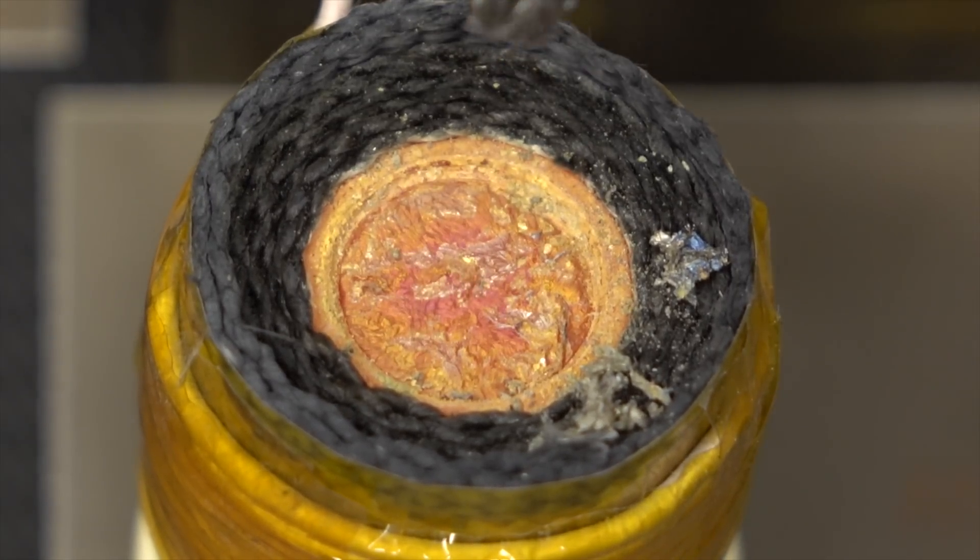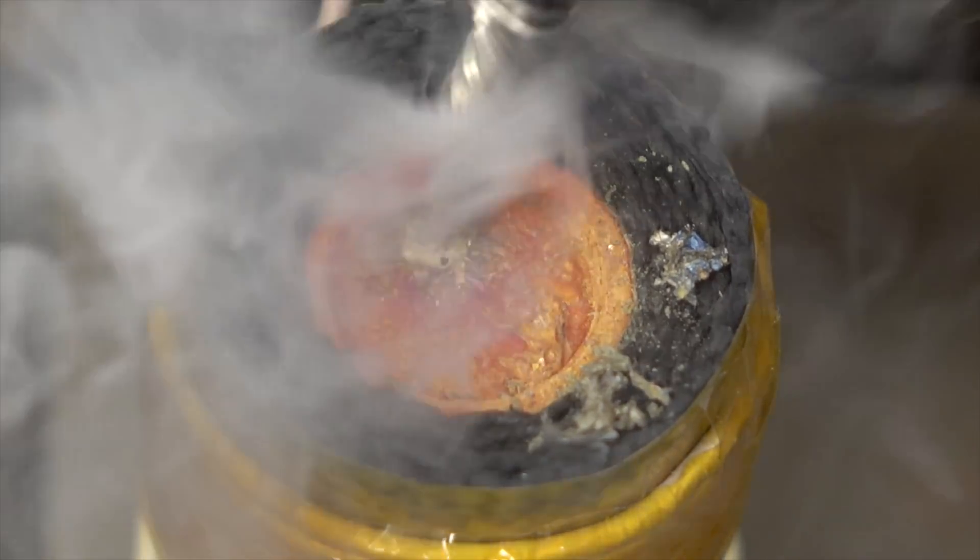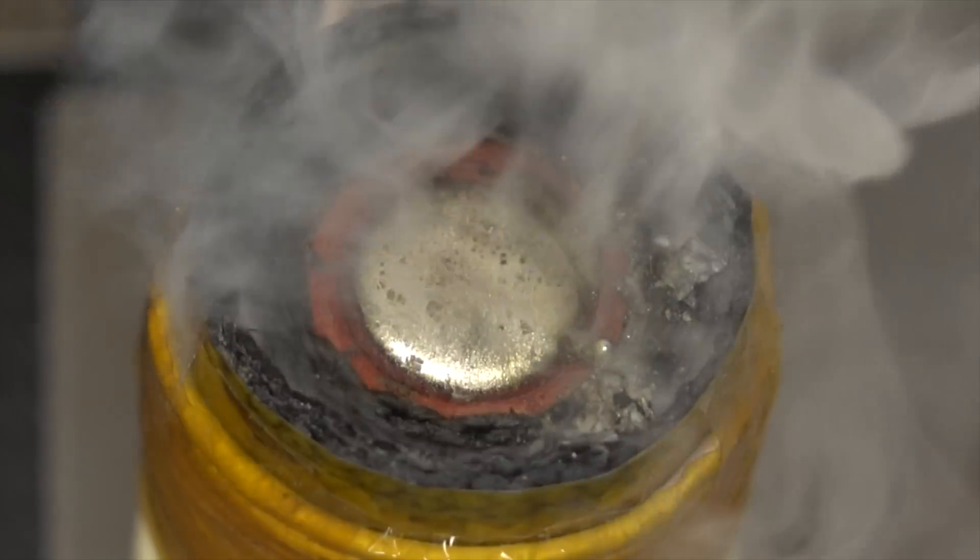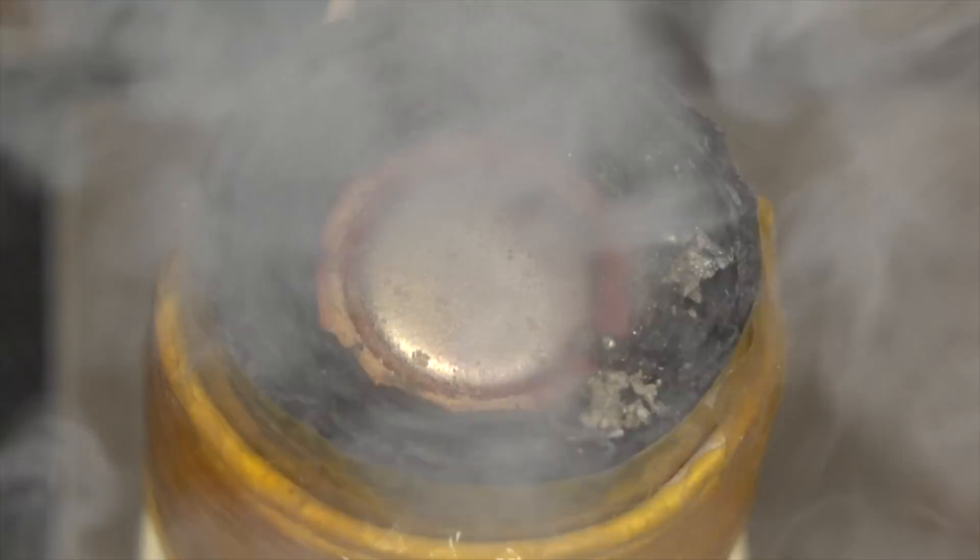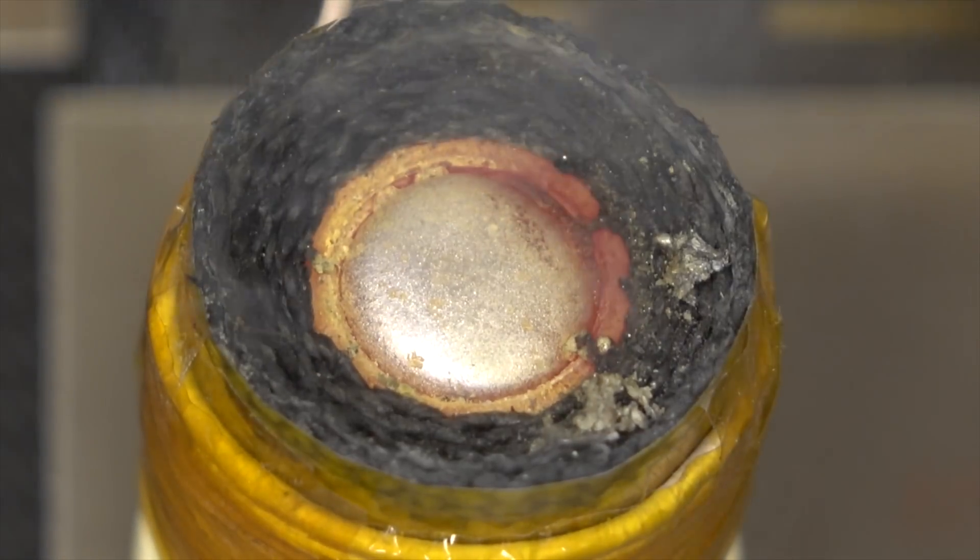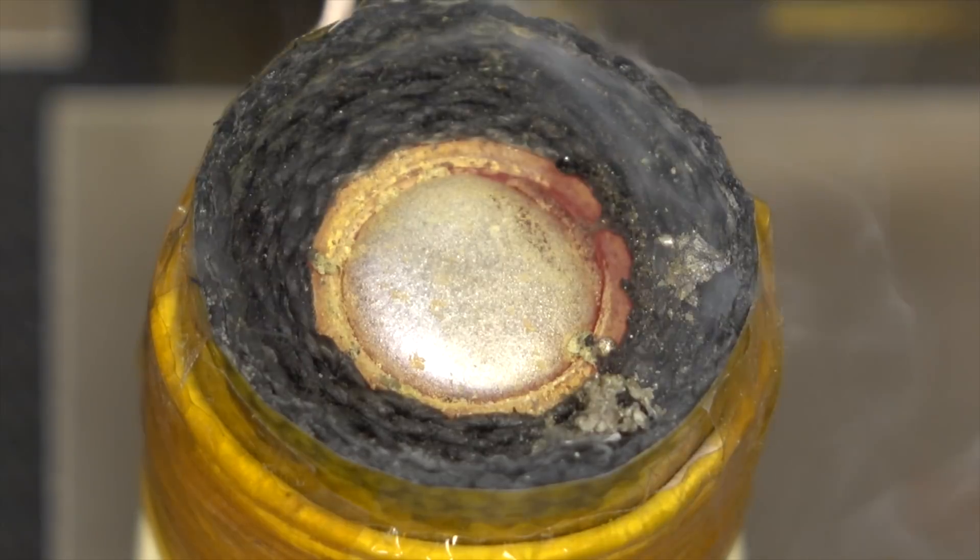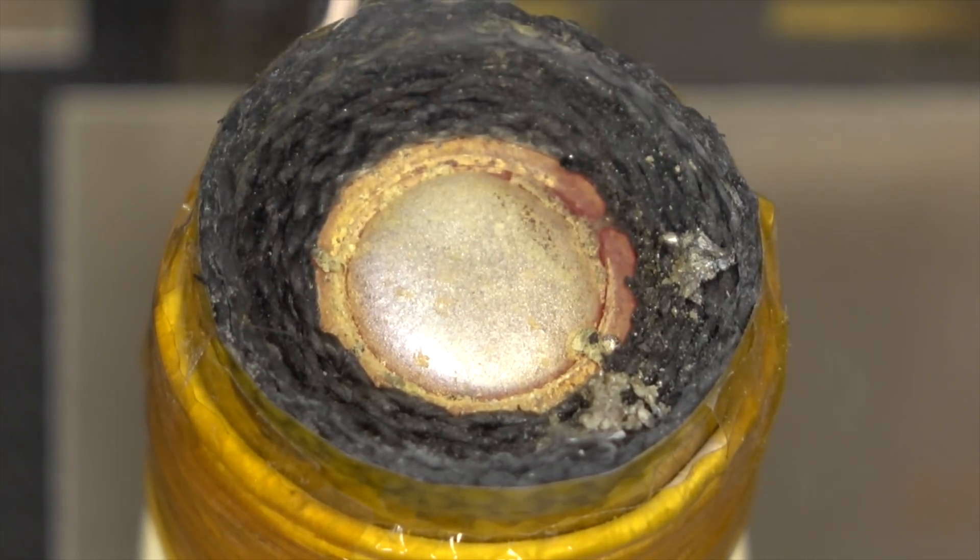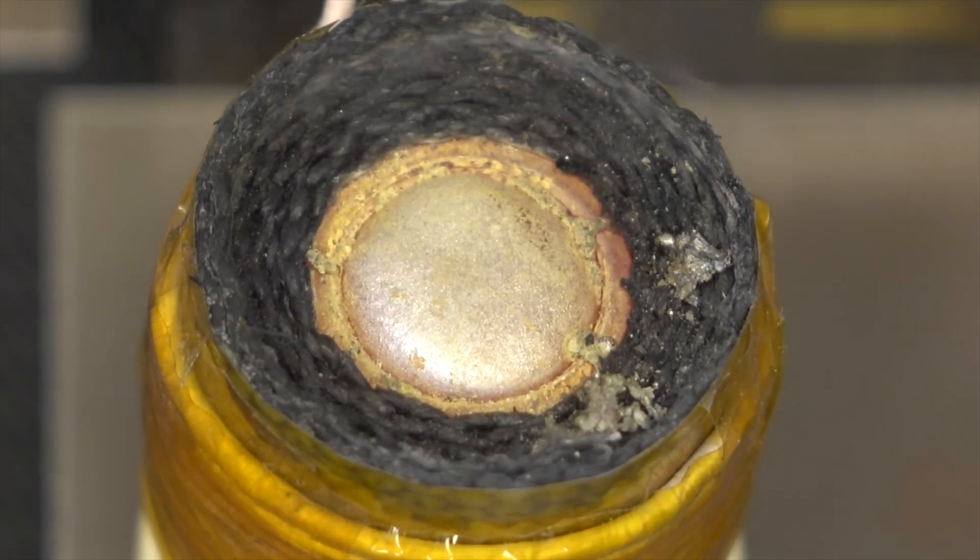Litz wire also doesn't heat up as quickly as an equivalent gauged wire. For example, if you have a 100 strand Litz wire with 10 amps of current flowing through it, each strand is only carrying 100 milliamps so it is less likely to heat up than a single wire carrying 10 amps. The hotter a conductor gets, the higher its resistance becomes. Keeping your working coils cool is very important for efficiency.